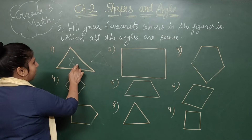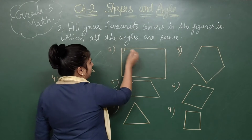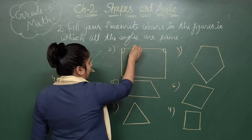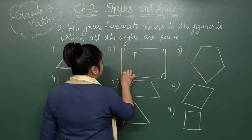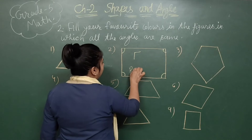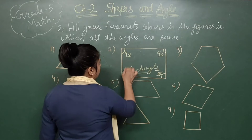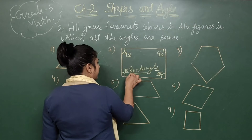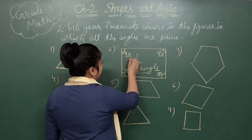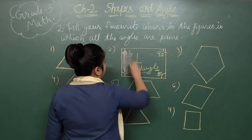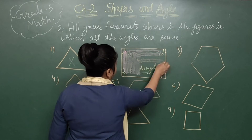Now you can see picture number two — rectangle. Rectangle's angles are all equal. If you create an L-shape at each corner, you can also create the same L-shape at every other corner. It means rectangle has 90-degree angles at all corners — L-shape type. So you can say this is your rectangle and the angles are the same — 90-degree type. So you can fill your favorite color; I am filling pink color.